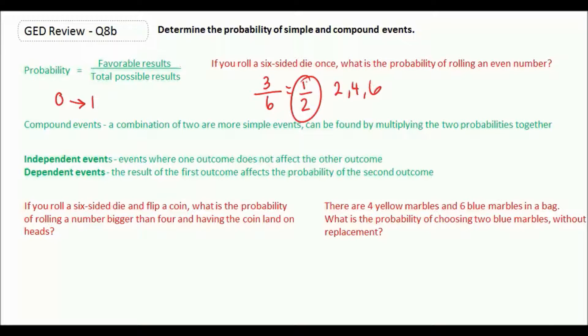Now a lot of times you'll have to find probabilities for several things happening at once. That's what is called a compound event. It's a combination of two or more simple events, and it can be found by multiplying the two probabilities together. You can have independent events, which is events where one outcome does not affect the other outcome. On the other hand, dependent events means the result of the first outcome affects the probability of the second outcome.